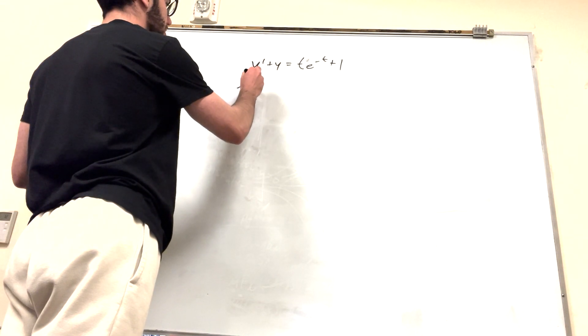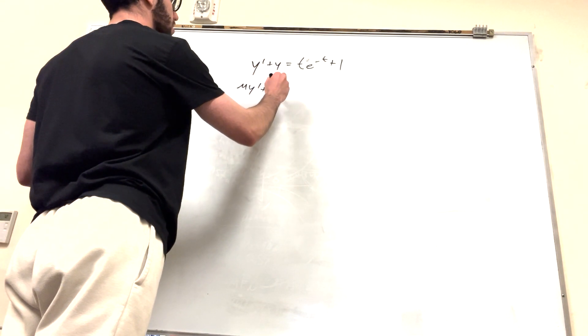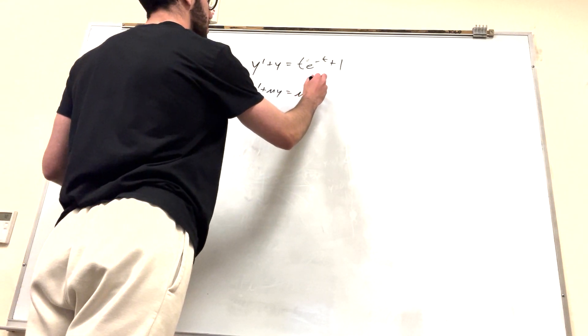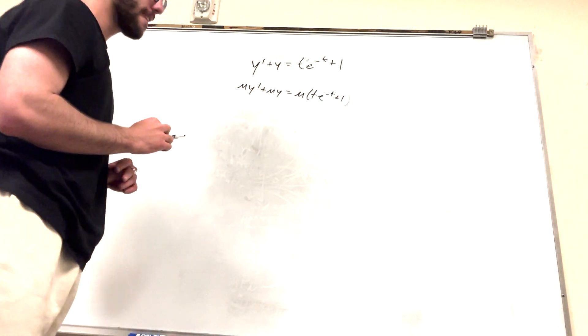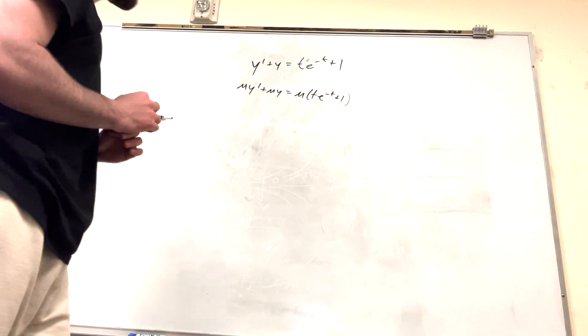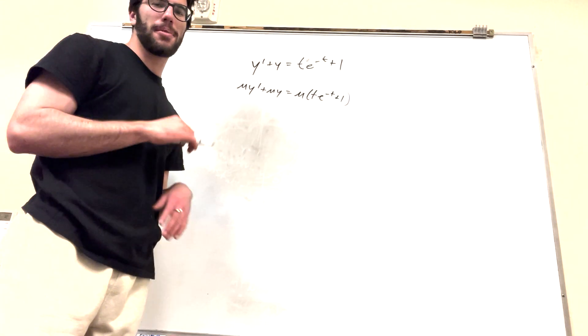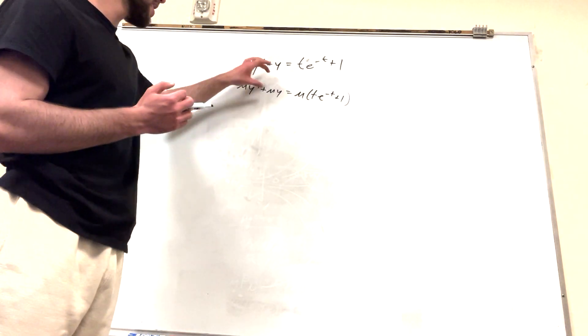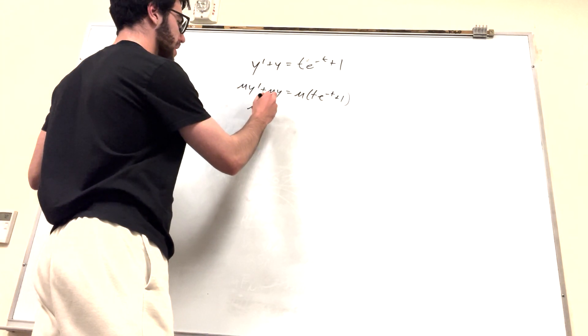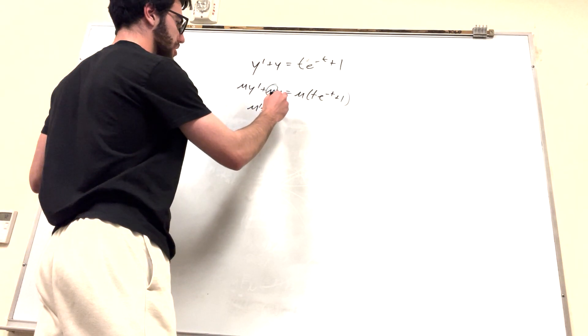So we're gonna multiply both sides by mu. mu of t is negative t plus 1. Basically, I don't know if I feel like explaining this right now because I just did it in my previous videos. But basically we're trying to find when mu prime is equal to this function here. So this is just mu.